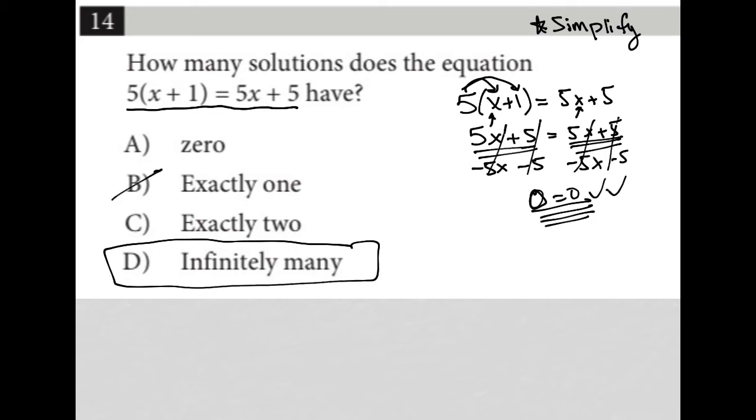It definitely cannot be exactly one value or exactly two values coming from what we see here. And if you'd like, you could always test this out. If you weren't certain, you say, well, what if I said x were equal to three? What would happen?